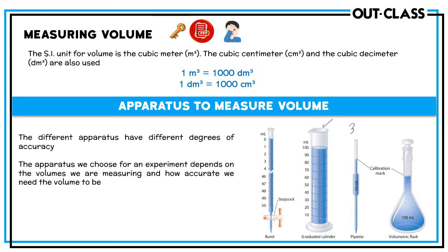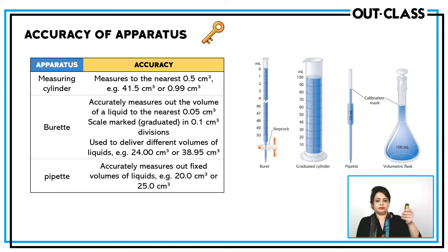The last apparatus is the volumetric flask. Volumetric flasks have different capacities and also have only one marking, so they can only measure one fixed volume — 50, 100, 250, or 500 cm³ depending on the capacity. Volumetric flasks are used to make solutions. If you want to make a solution of 100 cm³, 500 cm³, or one liter, you use a volumetric flask. Measuring cylinders and beakers are not accurate for making solutions.